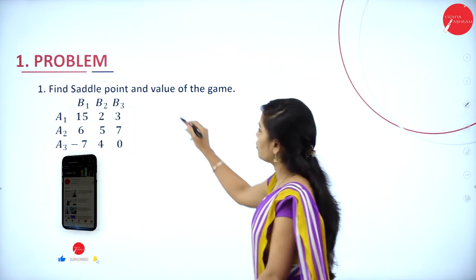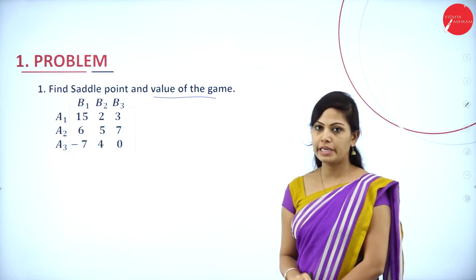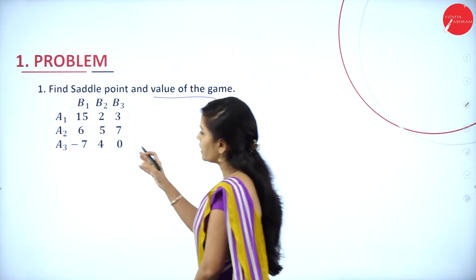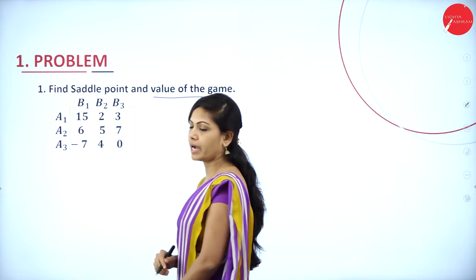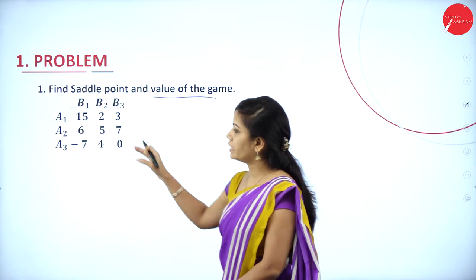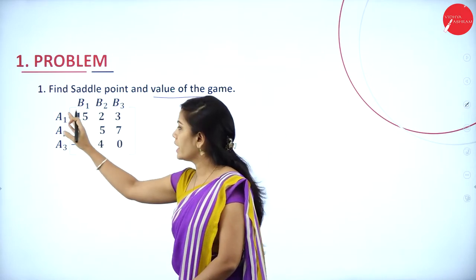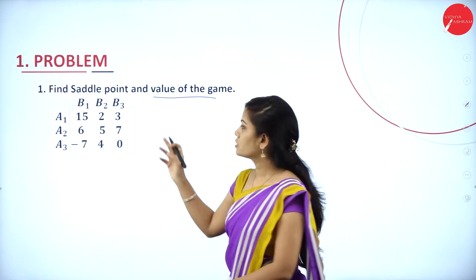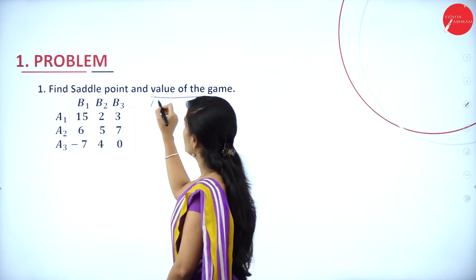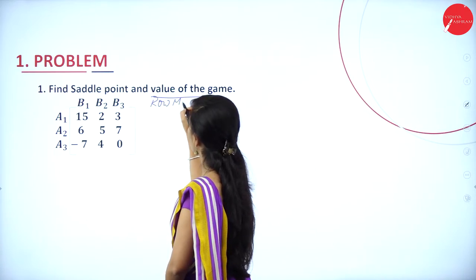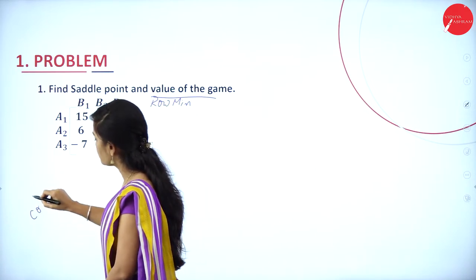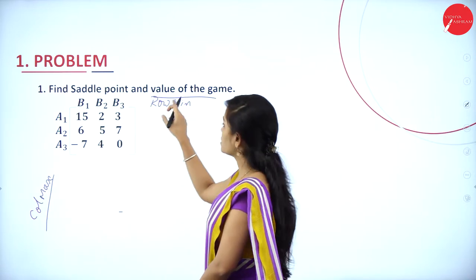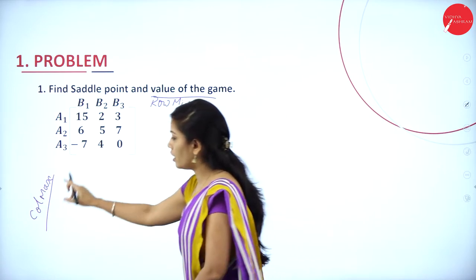First problem: find the saddle point and value of the game. We have one matrix representation, a 3×3 matrix, with player A and player B — A1, A2, A3 in rows and B1, B2, B3 in columns. For finding the saddle point, we have to find the row minima and column maxima.